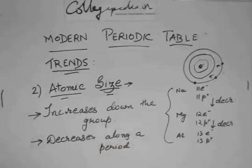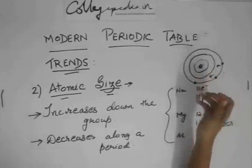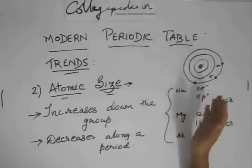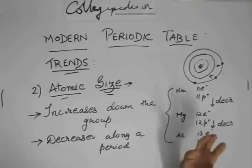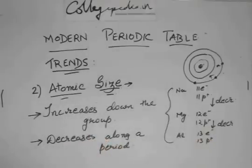The atomic size will decrease along a period. They will ask you why does the atomic size decrease along a period. You have to state that the effective nuclear charge due to the addition of the proton will increase. The interaction between the electrons and protons will increase and the nucleus will hold the electrons more strongly and bring them closer to itself, thus reducing the atomic size.